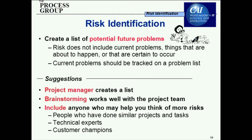The first step is to identify risk — looking for potential future problems, things that are not happening now and not guaranteed to happen, and therefore are risks. There are a couple of ways to do this. One is you could have a project manager create a list by themselves. The downside is that they typically don't know where all the risks are. They may know some — budget, schedule, and resource risks — but may not be tied into enough detail to understand where technical issues could be.